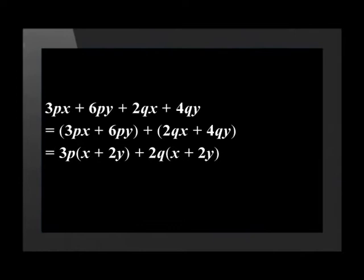If we take these out, we have 3p(x + 2y) plus 2q(x + 2y). We now have a common factor of x plus 2y, which we can take out.